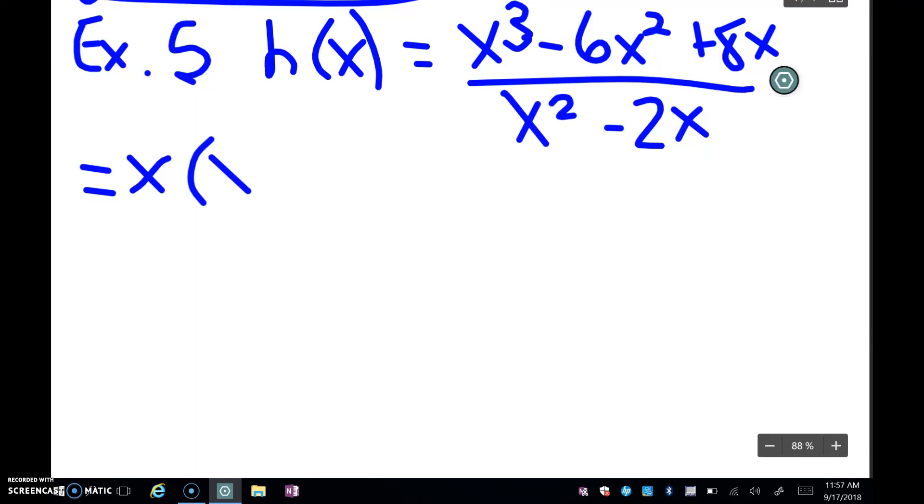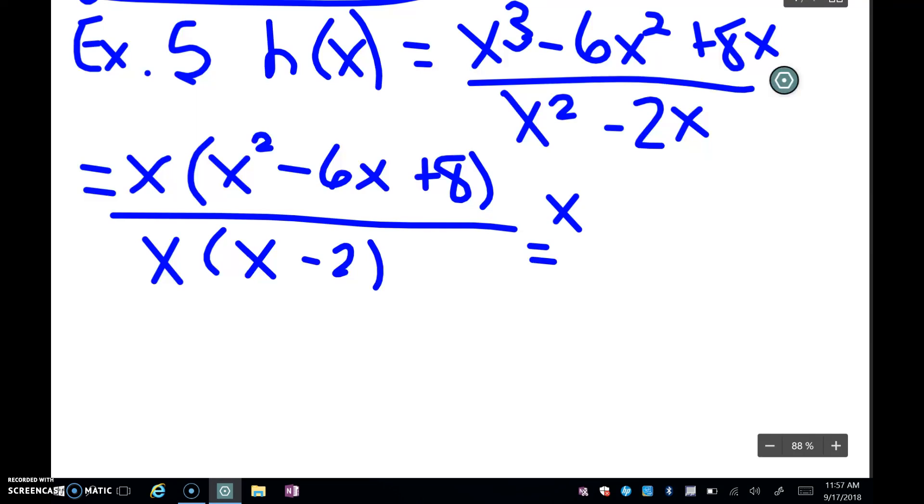So when I factor an x out, I get x times (x^2 - 6x + 8). In the denominator, I can factor an x out. So I get x times (x - 2). And in the numerator, I can factor that quadratic further into (x - 4) times (x - 2). And my denominator is completely factored. So I'll just write that back down again.